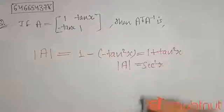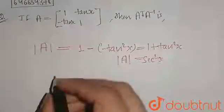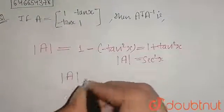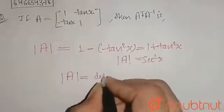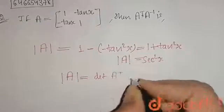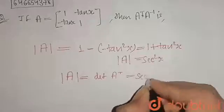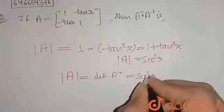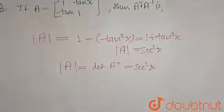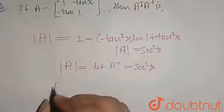Now here we know that the determinant of A is equals to determinant of A transpose. So here it will be equals to sec squared x.